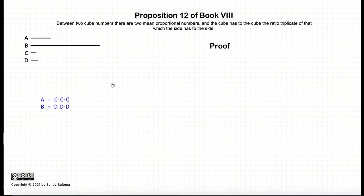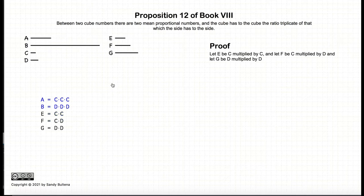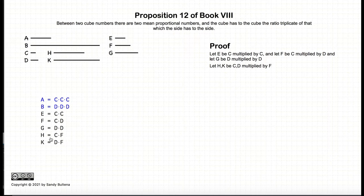So let's begin our proof. We start by creating three new numbers, e, f and g, such that e is equal to c squared, f is equal to c times d, and g is equal to d squared. And then we create two more numbers such that h is equal to c times f, and k is equal to d times f.